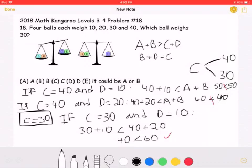And 40 is, in fact, less than 60, so we know this solution is true. That means that answer choice C must be correct because C is equal to 30. Thank you so much for watching and please subscribe and comment.